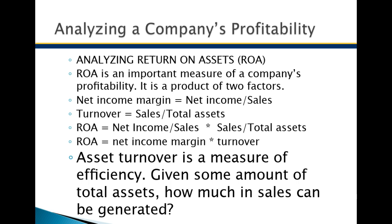Net income needs to increase at a faster percentage than sales, because if sales increases that helps turnover of the assets, but if net income stays the same, your net income margin is going to decrease. It's sort of a balancing game. Ideally, you want sales to increase and you want net income in relationship to sales to increase even more, to have a higher return on assets.